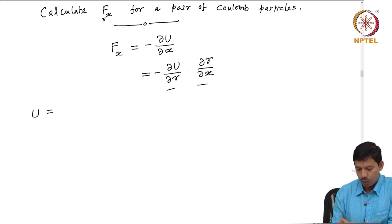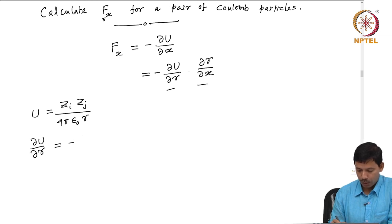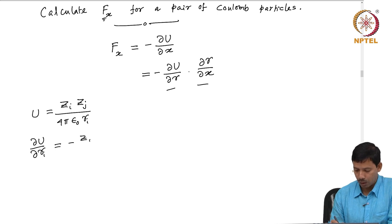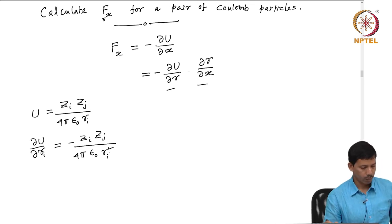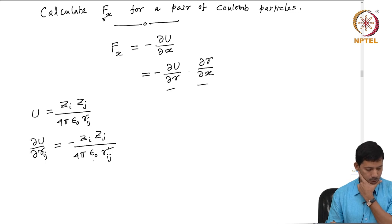The potential U was z_i * z_j divided by 4π ε₀ r. So, ∂U/∂r_ij is equal to minus z_i * z_j divided by 4π ε₀ r_ij². Here r_ij is the inter-particle distance we are talking about. So, -z_i z_j / (4π ε₀ r_ij²) is my ∂U/∂r.